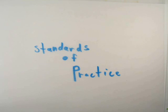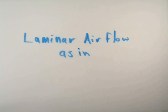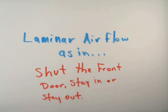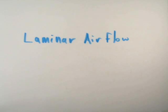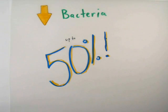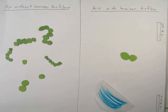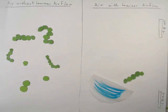There are standards of practice that can be followed. One of these is the use of laminar air flow, which can decrease the number of bacteria found by up to 50%. Laminar air flow is effective because it circulates the air in the room, filtering out the bacteria found in the air.